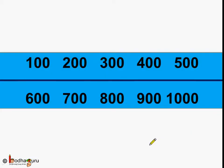Let's look what we did. We counted 100, 200, 300, 400, 500, 600, 700, 800, 900 and 1000.